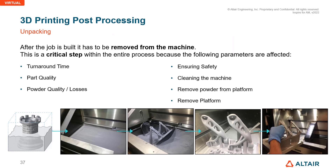After printing is done, the built part must be removed from the machine — this is a critical step. The following parameters can be affected: turnaround time, part quality, powder quality and powder loss, ensuring safety, cleaning of the machine, and removal of the build platform.